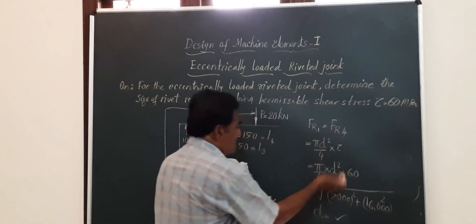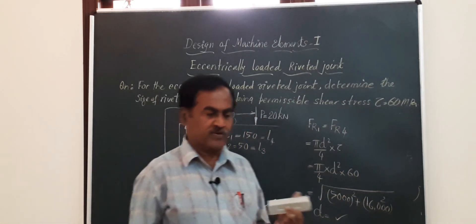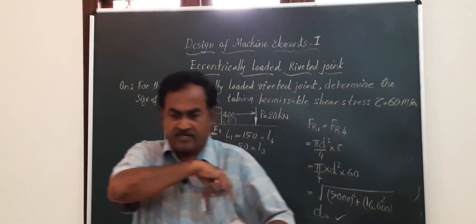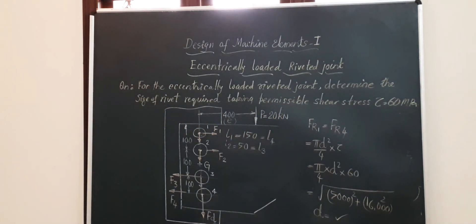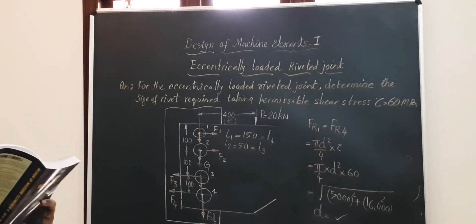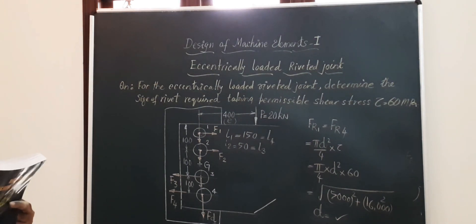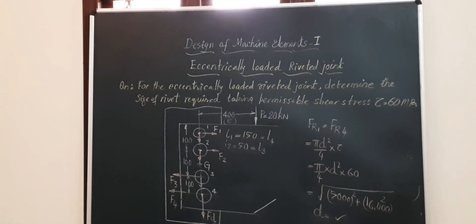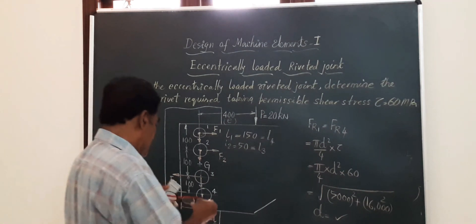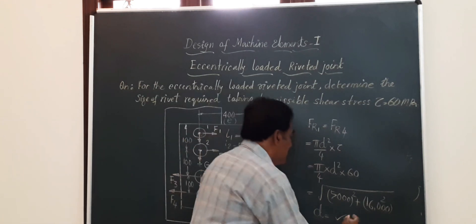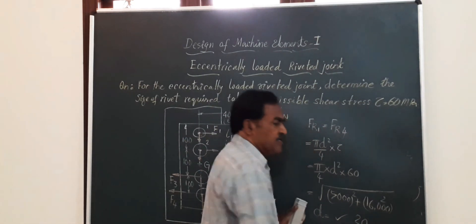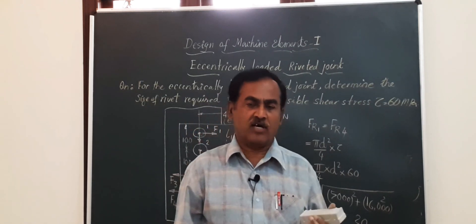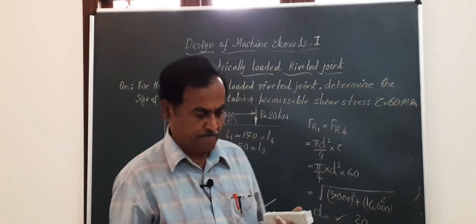By equating the shear strength formula to FR1 and solving, the diameter works out to 18.86 mm. We therefore obtain a standard diameter of 20 mm.